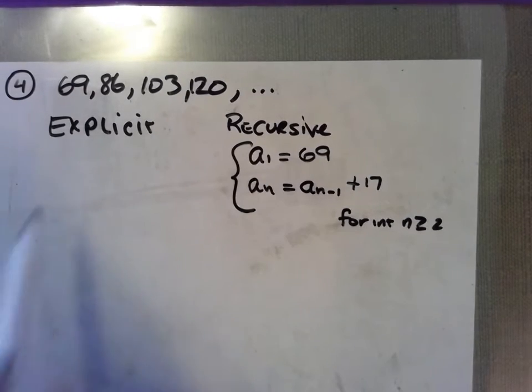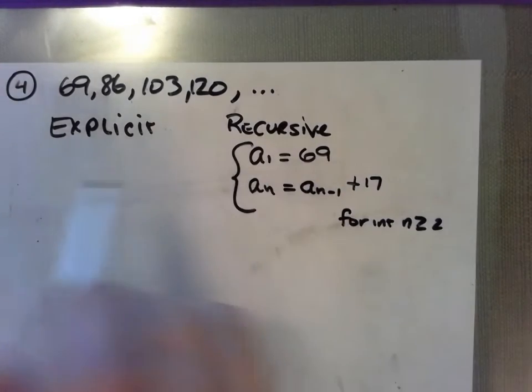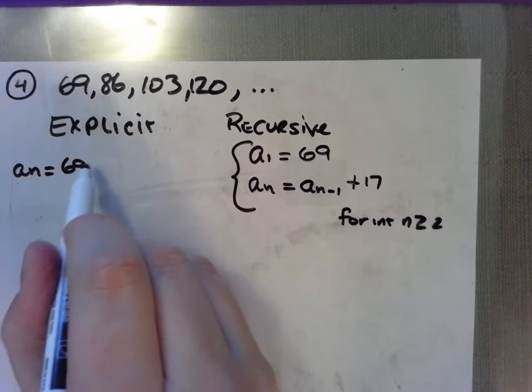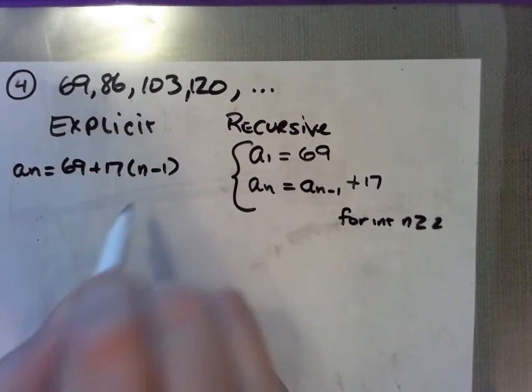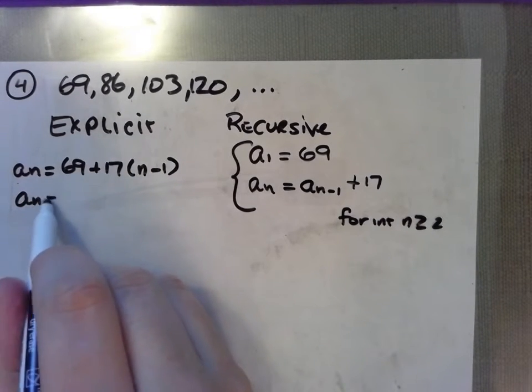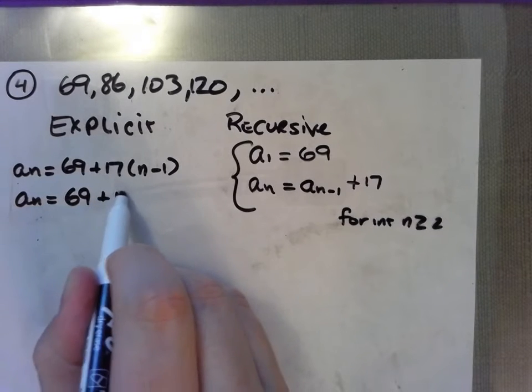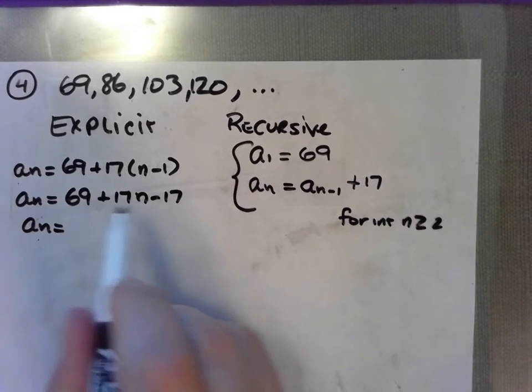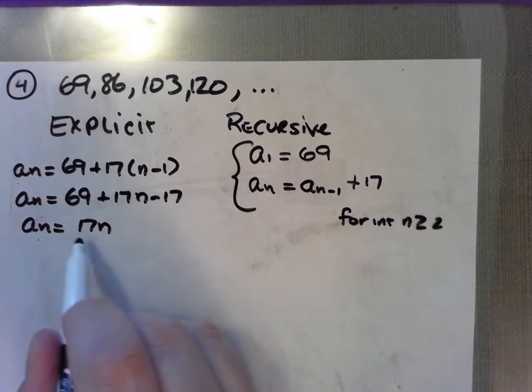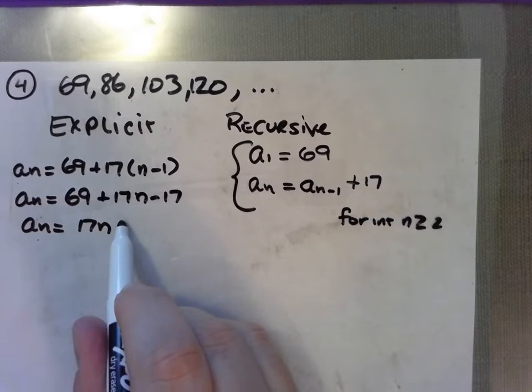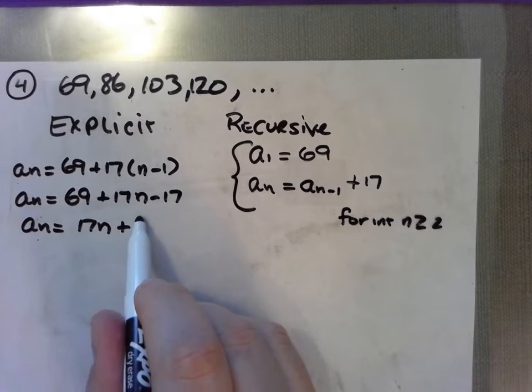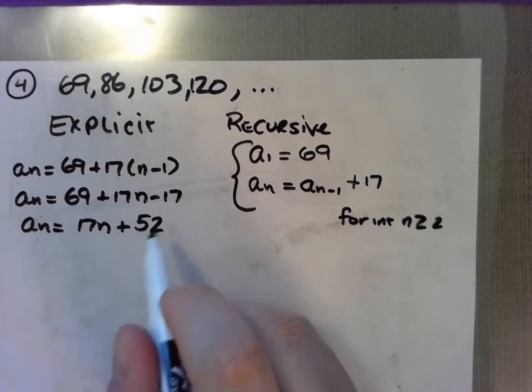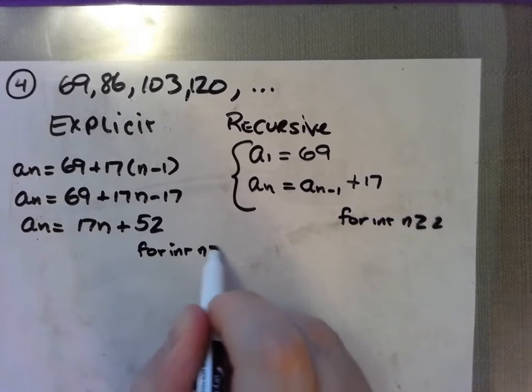The explicit formula does again use the first term and the difference this way: a sub n equals the first term, 69, plus the difference, 17, times the quantity n minus 1. When I distribute 17, it's 69 plus 17n minus 17. a sub n equals, starting with the n, 17n, and then we're going to add to this 52. Let's add those back together to be sure, and this formula works for integers n greater than or equal to 1.